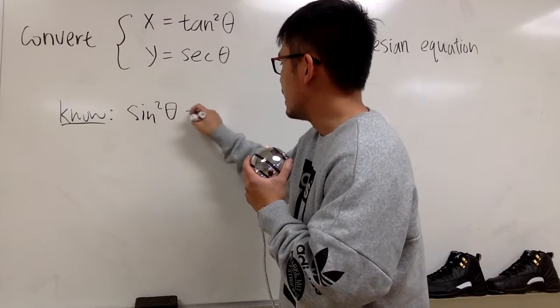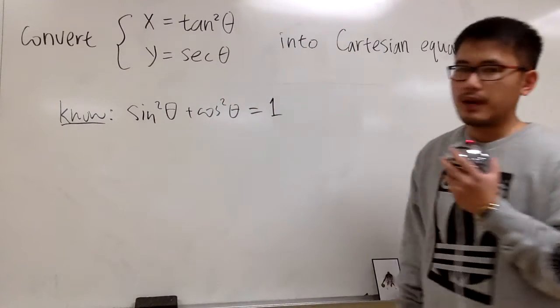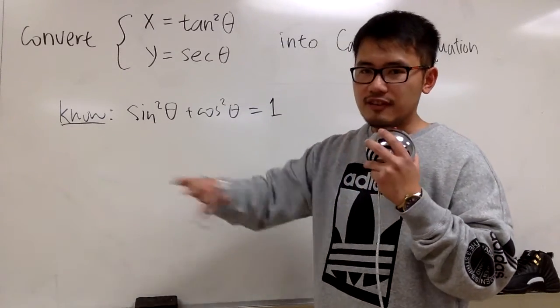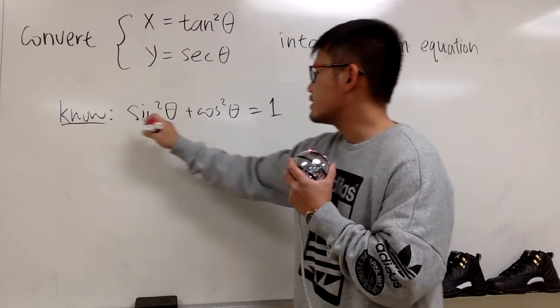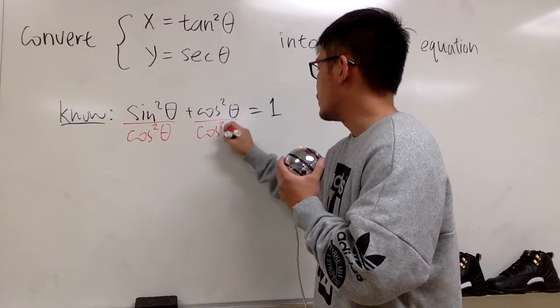sine squared theta plus cosine squared theta, we know this is equal to 1. And then the usual deal is, let's take this and divide everything by cosine squared theta, and we can prove a trig identity by doing so.